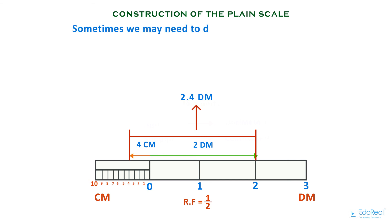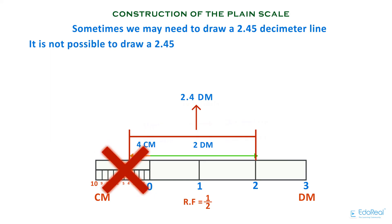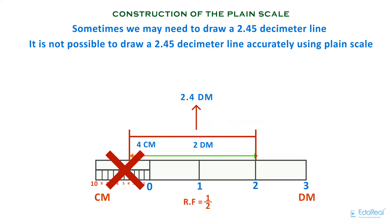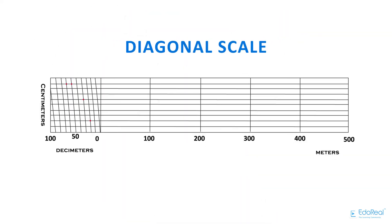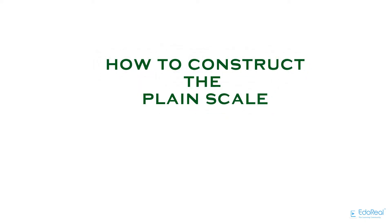Sometimes we may need to draw a 2.45 decimeter line. It is not possible to draw a 2.45 decimeter line accurately using a plane scale, because it can measure up to only the first decimal point. To draw more accurate measurements up to the second decimal point, we need to use a different scale — that is, the diagonal scale. In this video, we have discussed how to construct the plane scale.